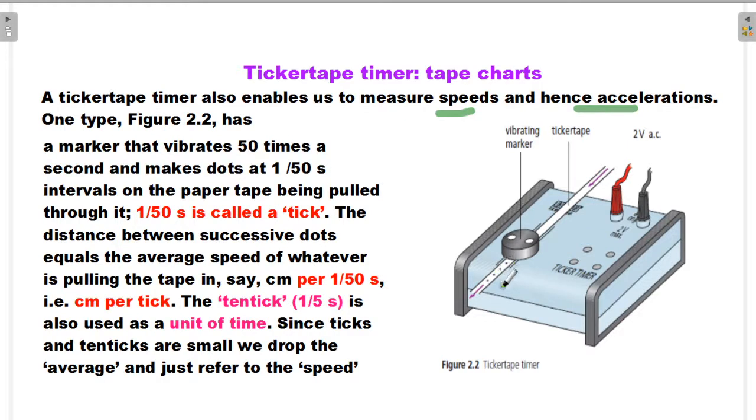1/50 second is called a tick. The distance between successive dots equals the average speed of whatever is pulling the tape, in centimeters per 1/50 second, or centimeters per tick.